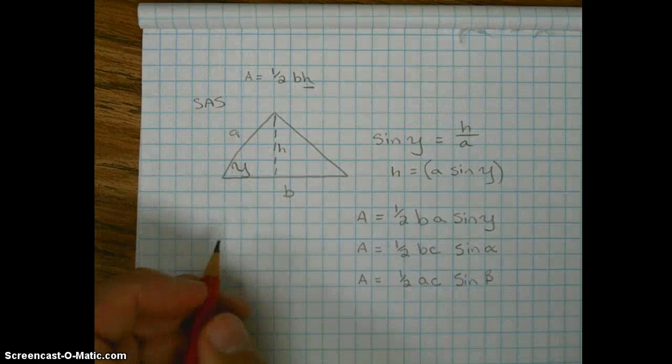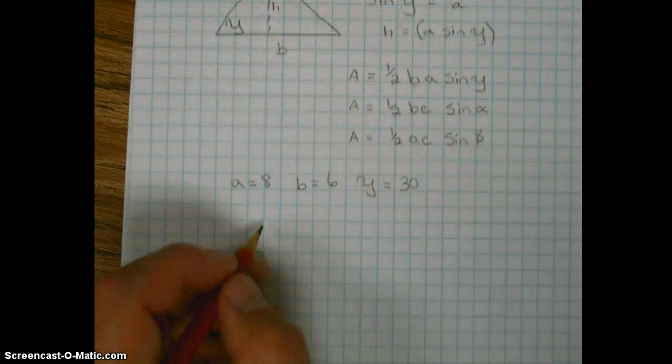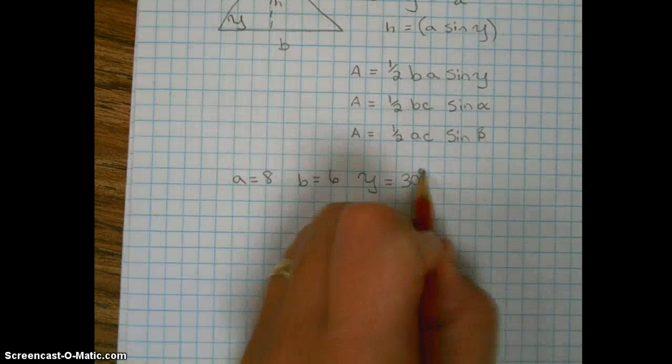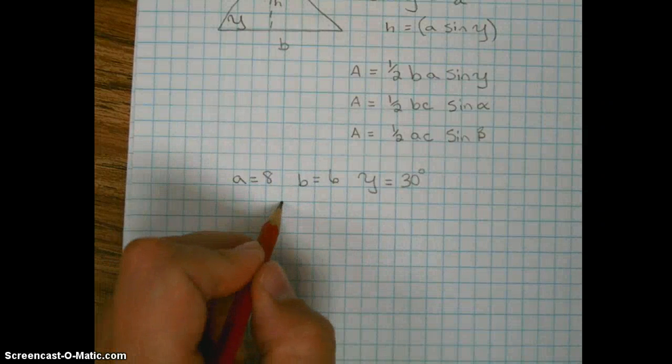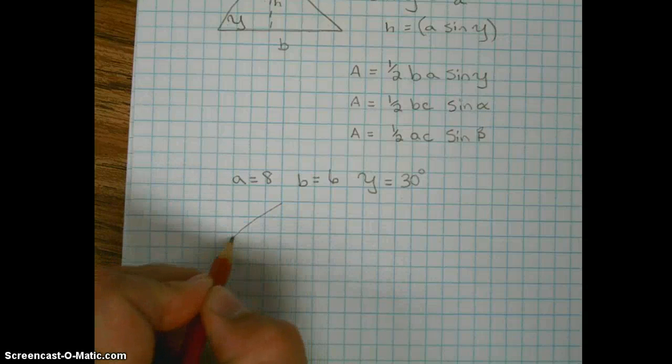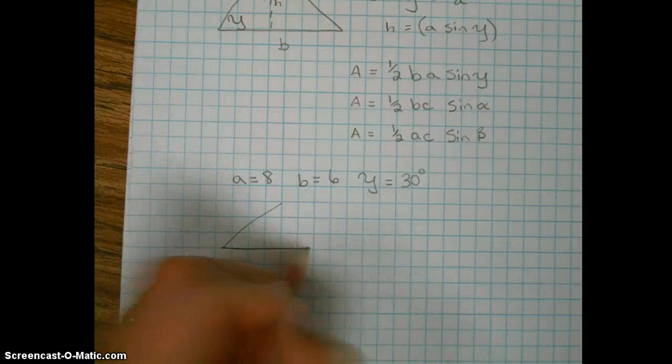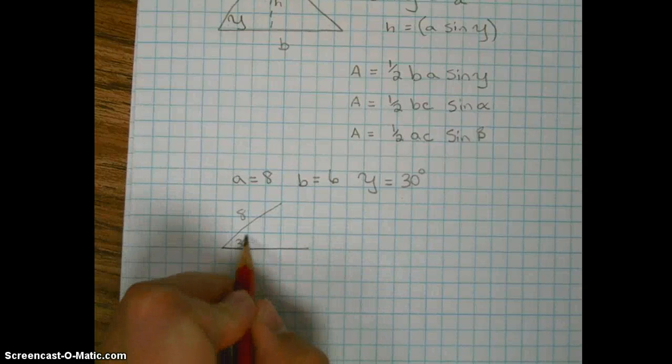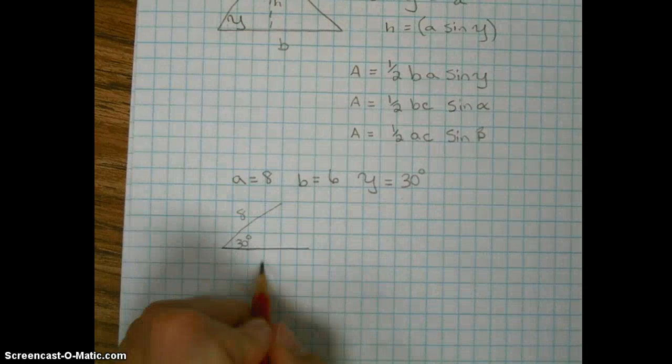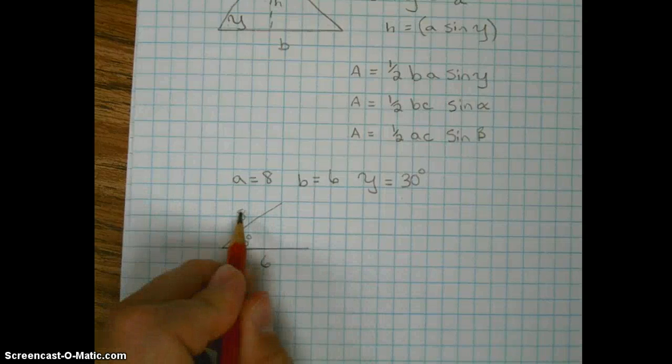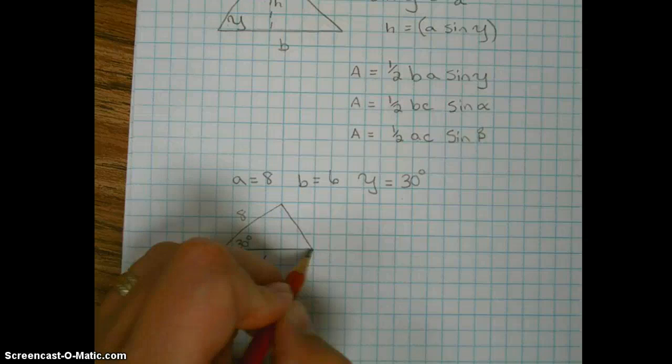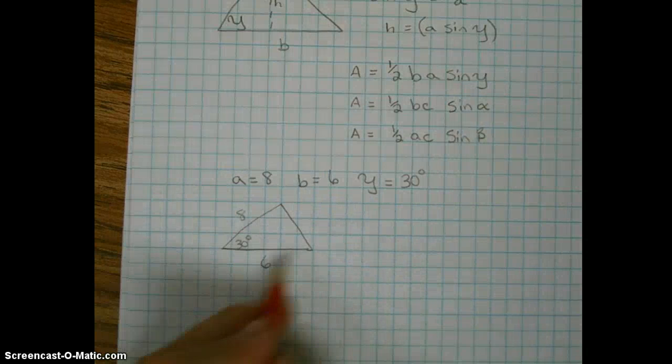So let's look at an example. Here we're given two sides and the included angle. So if I was to draw this for you visual people out there like myself, we'd have A is 8, the included angle is 30, and then the other side is 6. So side, angle, side. And now if I wanted to find the area of this triangle,